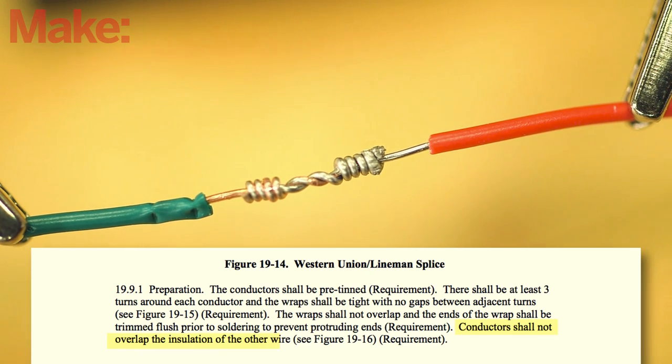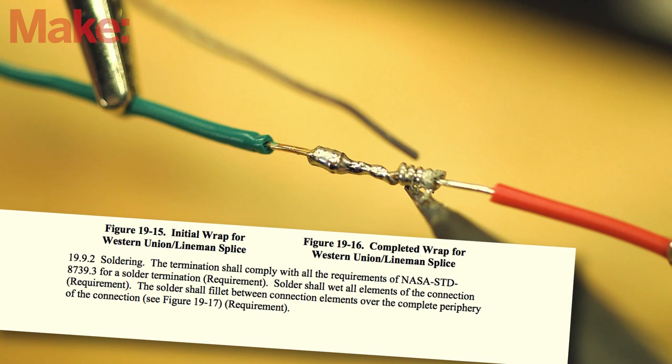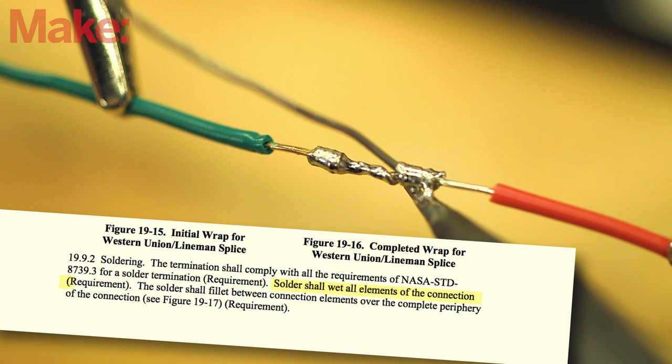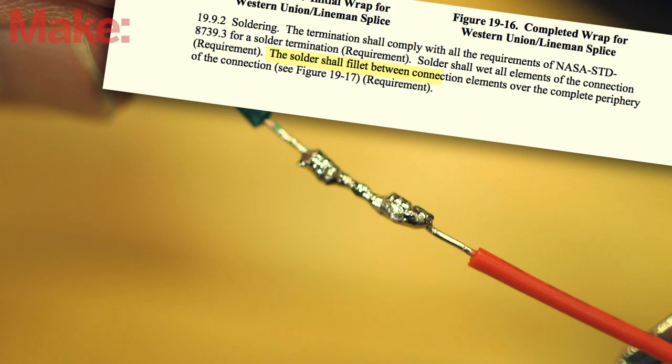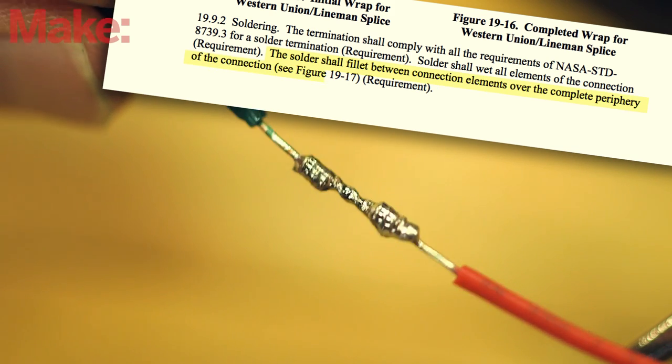Conductor shall not overlap the insulation of the other wire. Solder shall wet all elements of the connection. The solder shall fill between the connection elements over the complete periphery of the connection.